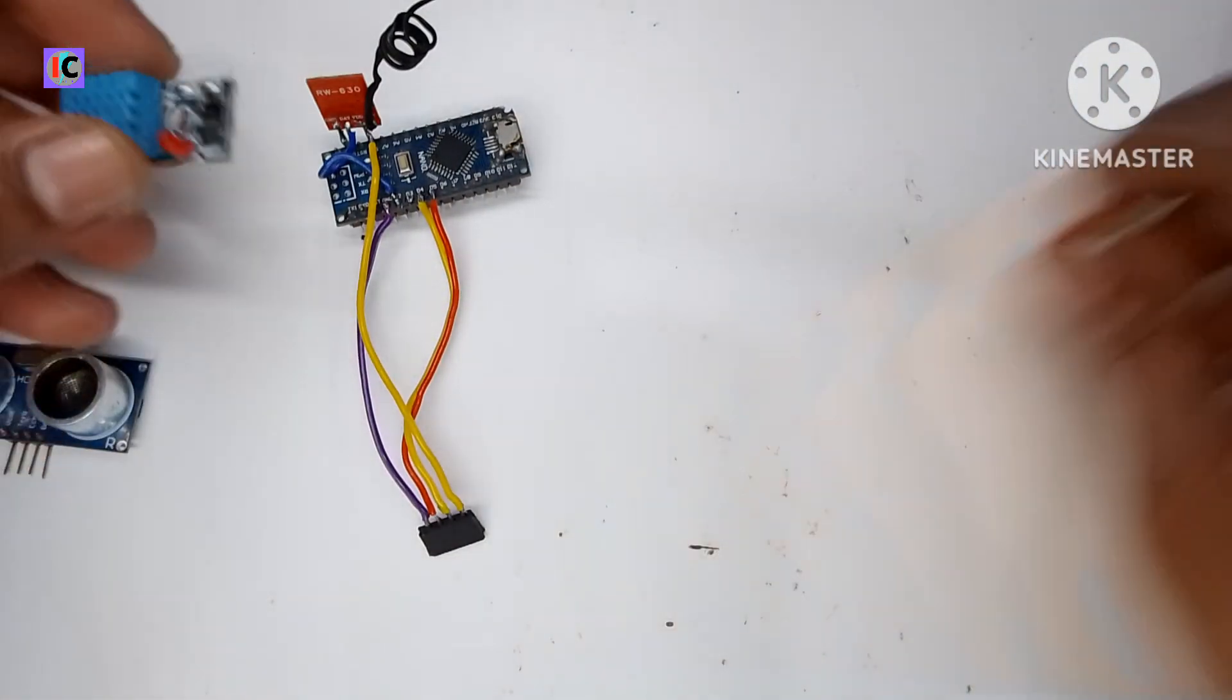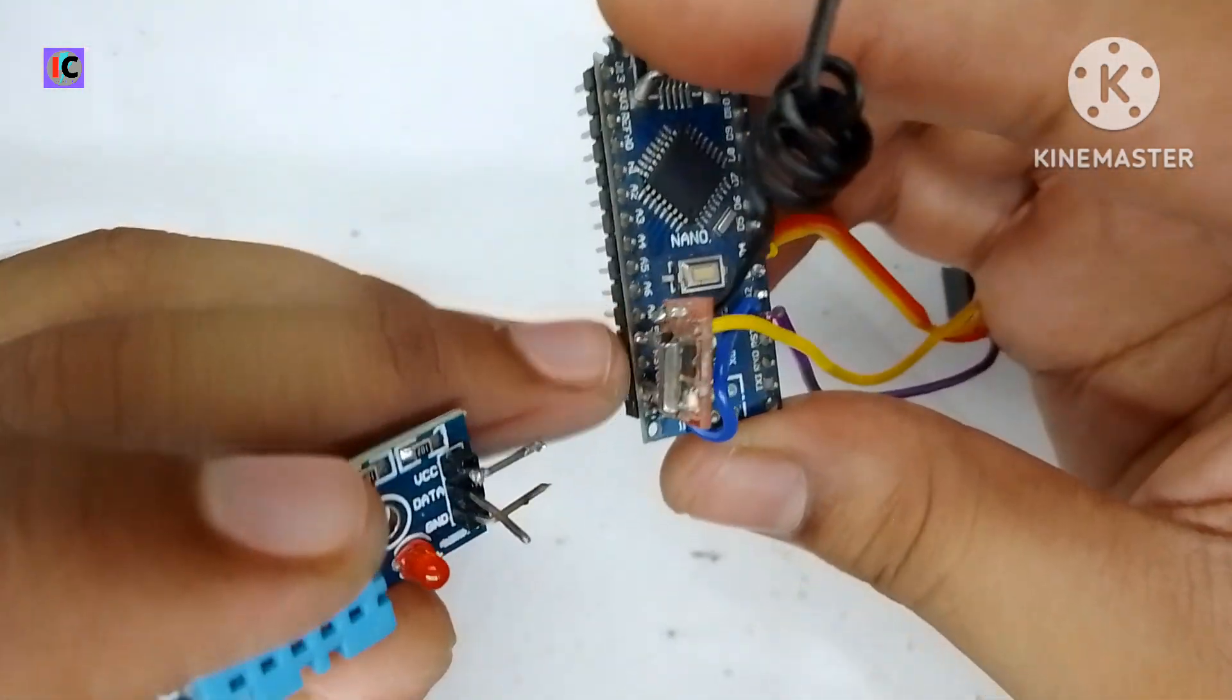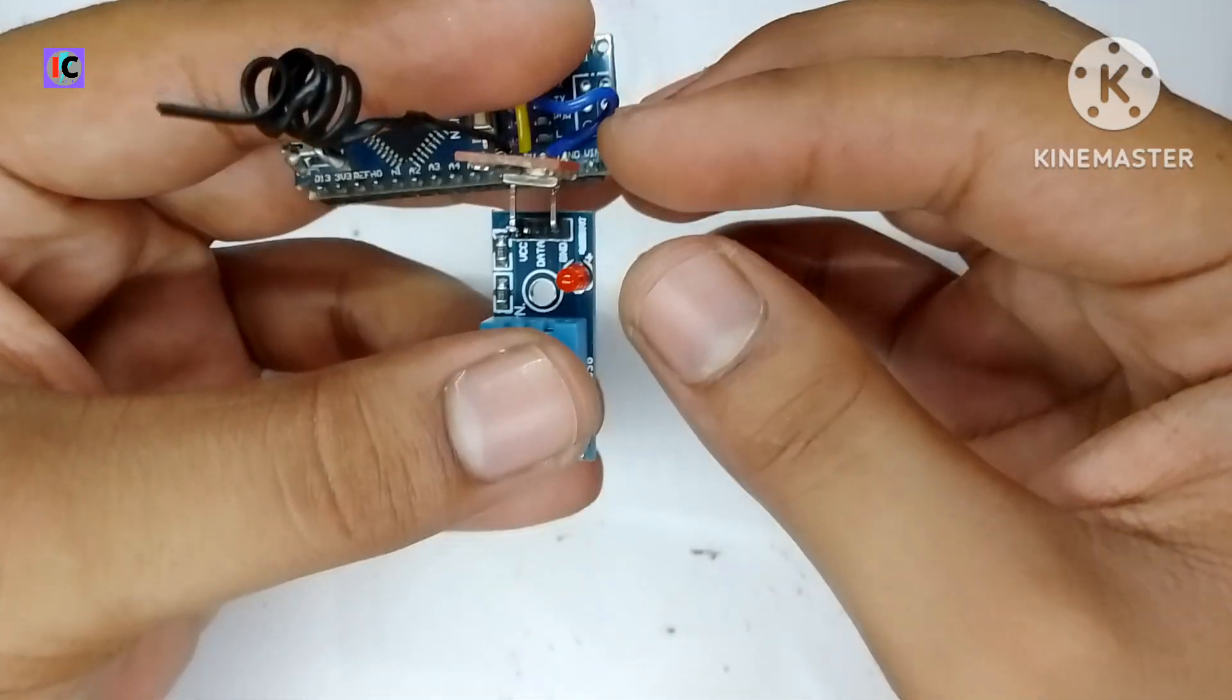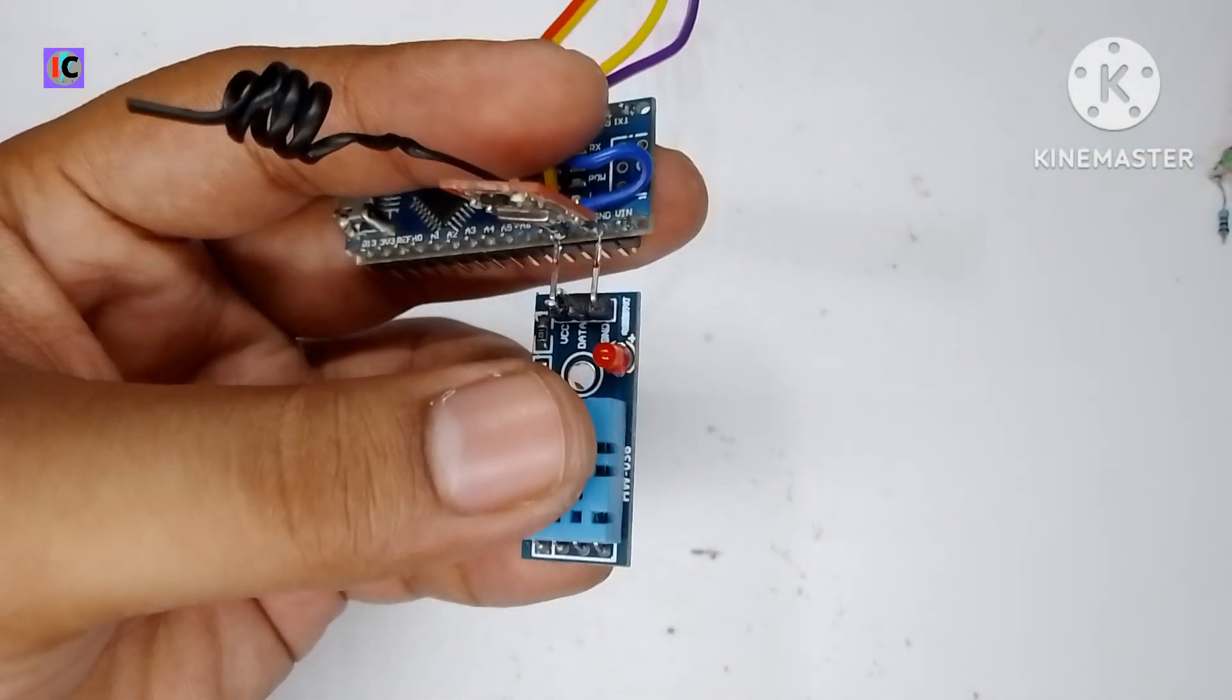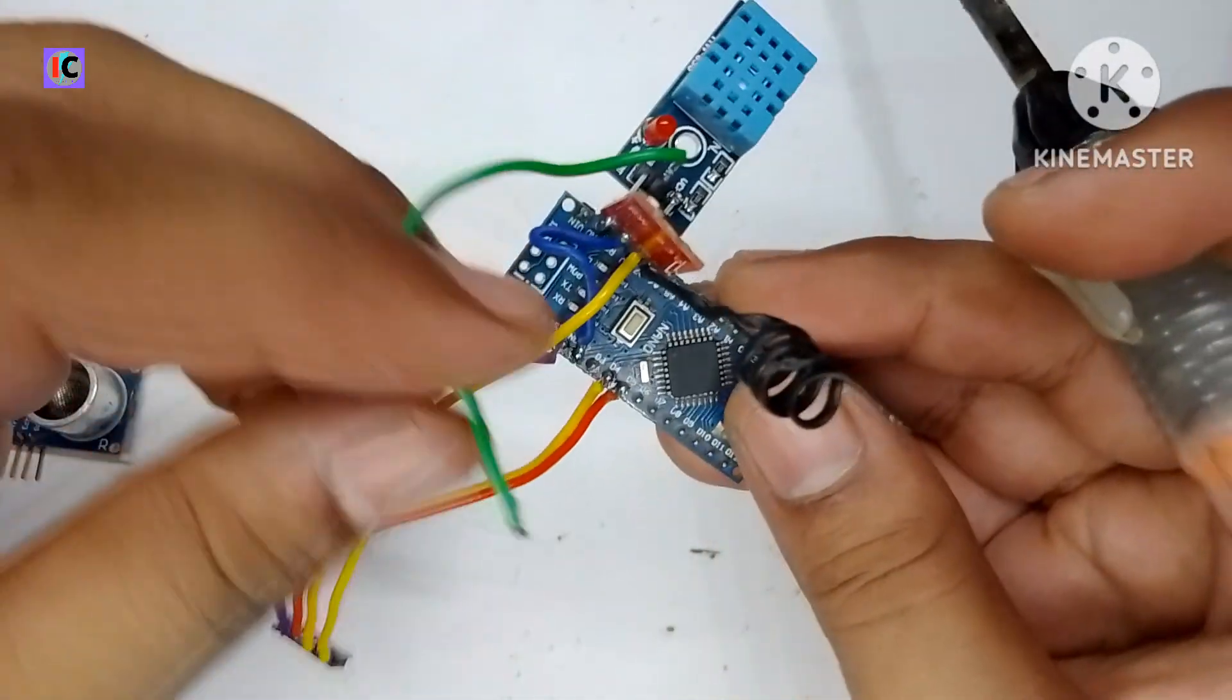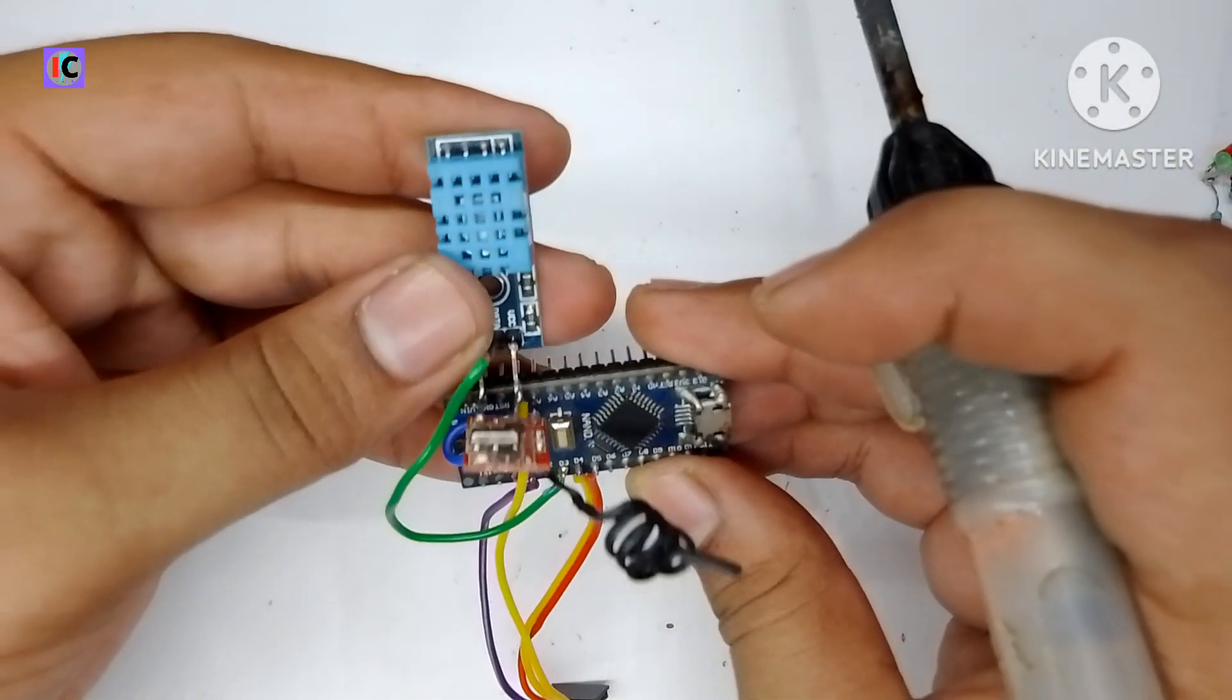The connection of this module is very simple. The 5 volt and ground will be connected to VCC and ground pins. The connection of the RF module with Arduino Nano is same as in the previous video. We are adding this module to power the DHT11, and the data pin of this sensor will connect to digital pin number 2 of the Arduino Nano. This way the connection is done on the transmitter side.